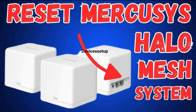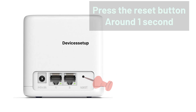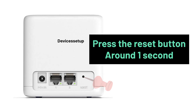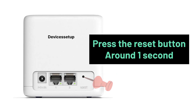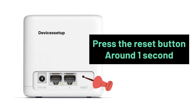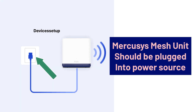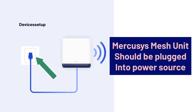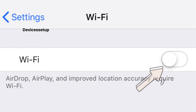First and foremost, reset your Hello Unit. You can do that by pressing the reset button for around 1 second. While you do so, make sure the Mercosys Mesh unit is plugged into a power source.